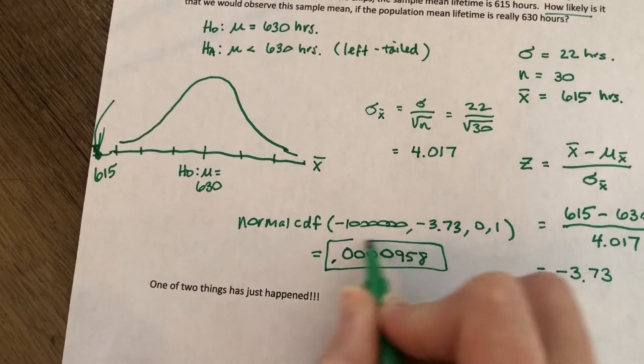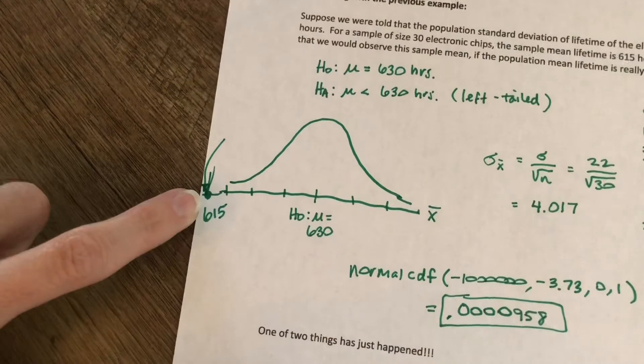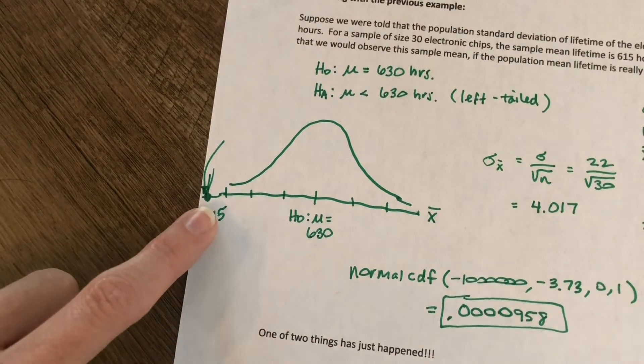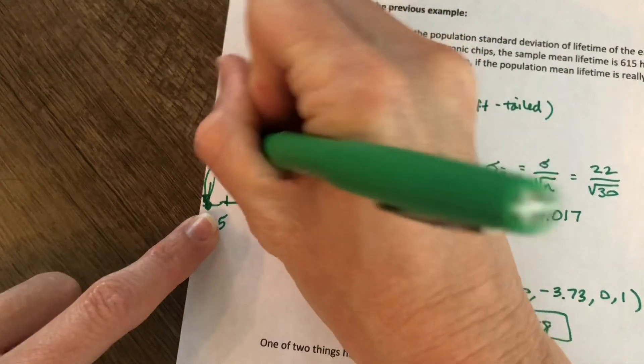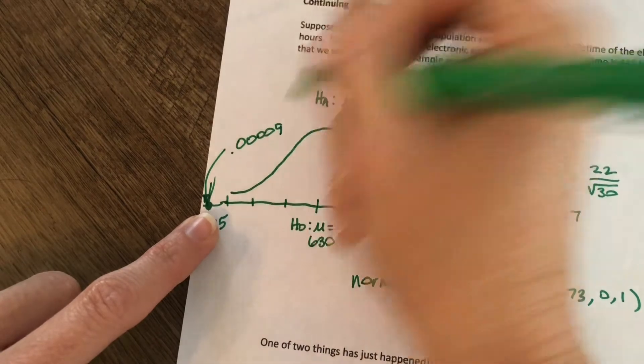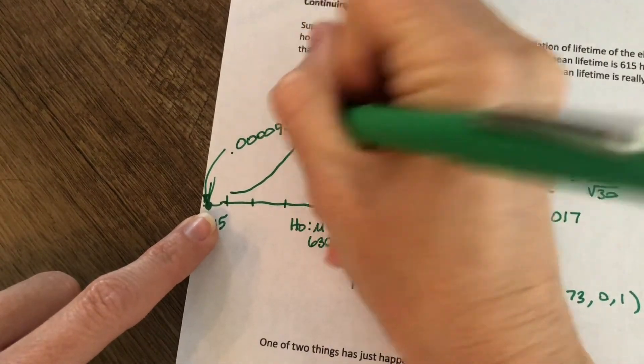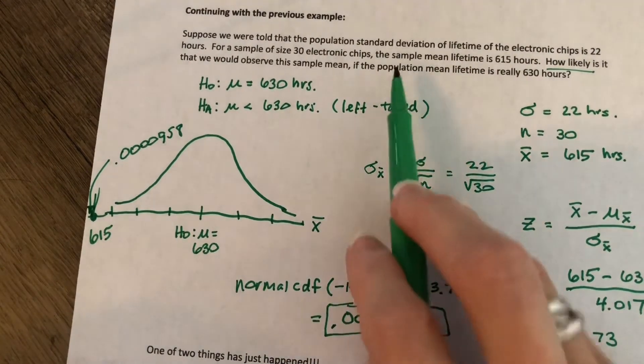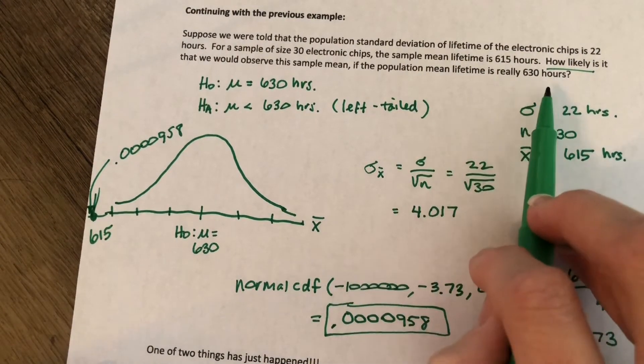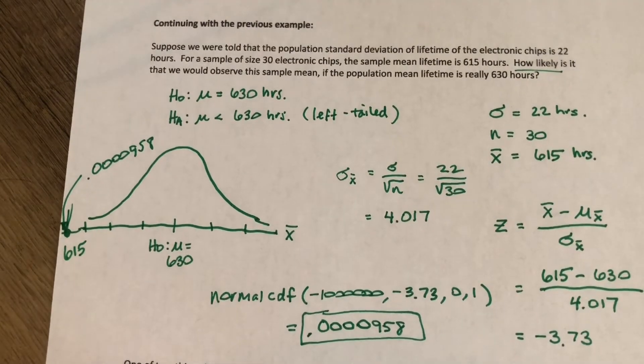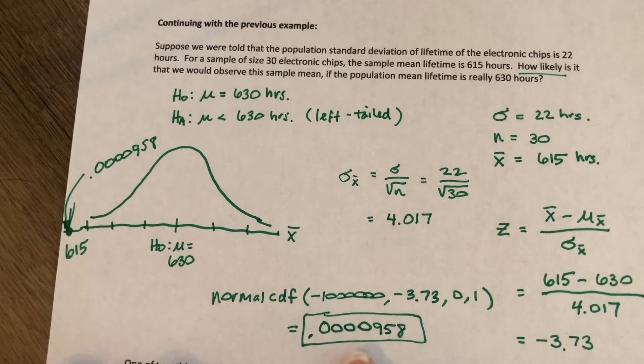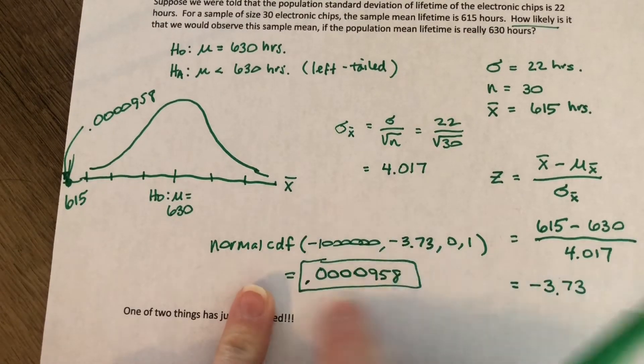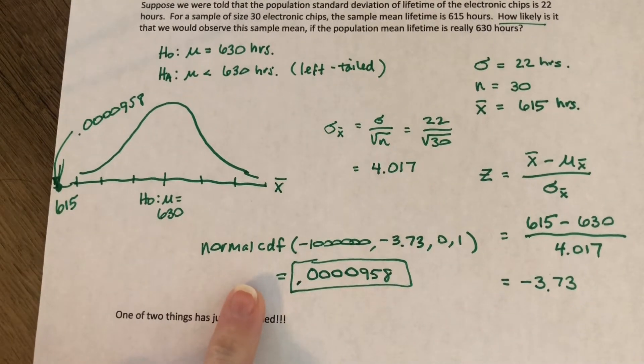So that answers our question. That's this area right up here. The area to the left of 615 in this distribution, 0.0000958. How likely is it that we would observe this sample mean if the population mean lifetime is really 630 hours? Well, it's extremely unusual. Very, very small probability. Remember, probabilities are between zero and one. This is almost zero.